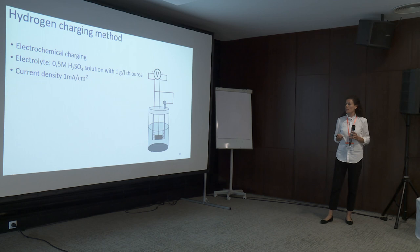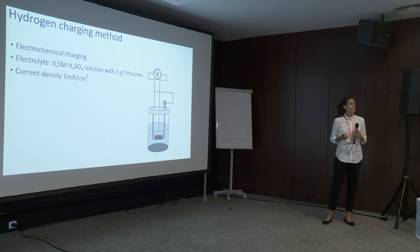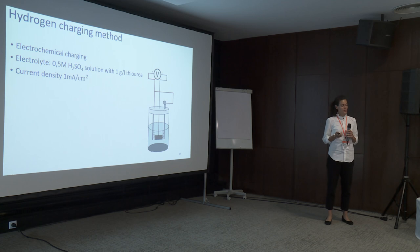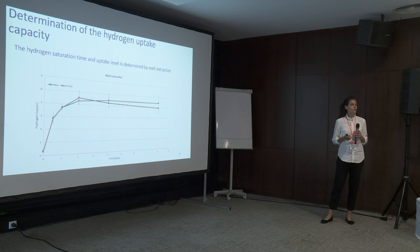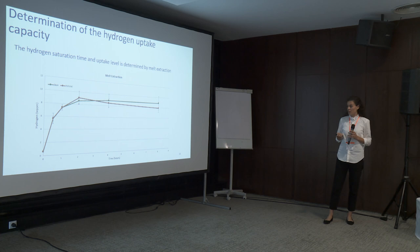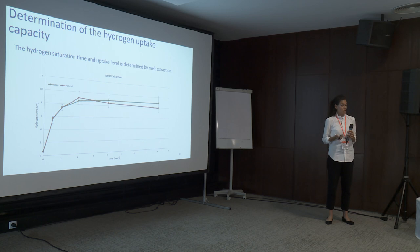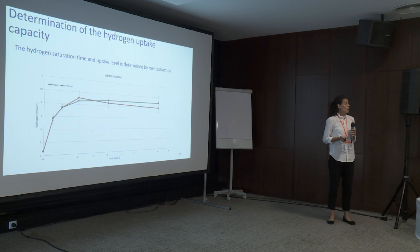Hydrogen was introduced by electrochemical charging. The electrolyte was sulfuric acid and thiourea — by adding thiourea, we ensured no gas formed around the sample so it was fully charged with hydrogen. Current density was 1 milliampere per square centimeter. Before testing, we determined the time needed for full hydrogen saturation using melt extraction: samples were heated to 1550°C and the hydrogen gas flow was measured by thermal conductivity detector. Both uncharged reference samples were also measured to confirm no hydrogen was introduced during production. For both materials, saturation was reached around two hours.